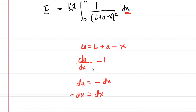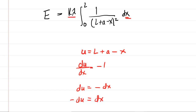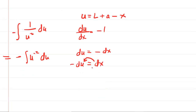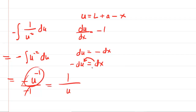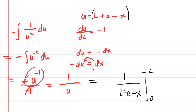Now we make our substitutions, focusing just on the integral. We have the integral of one over U squared, and DX becomes negative DU. Factor out the negative one and rewrite as negative integral of U to the negative two, DU. Applying the basic power rule, we add one to the exponent to get U to the negative one, then divide by that new exponent of negative one. The negatives cancel, leaving us with one over U. Substituting back, that's one over (L plus A minus X), with bounds from zero to L.